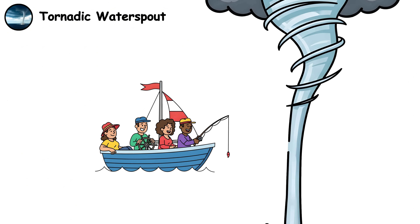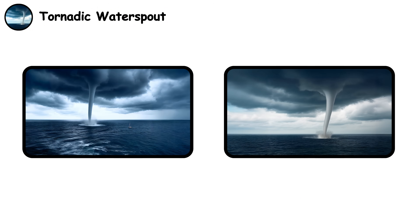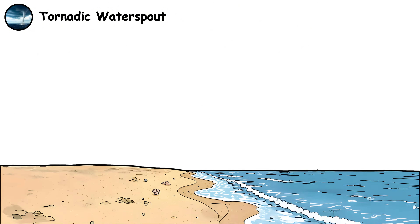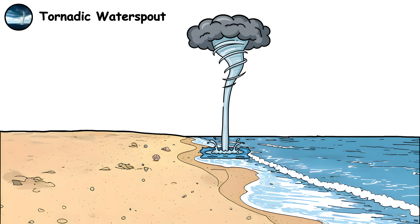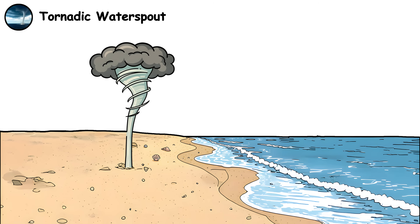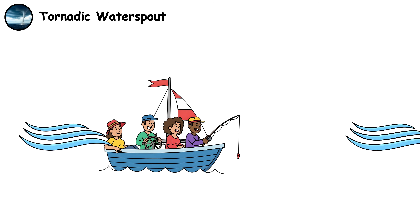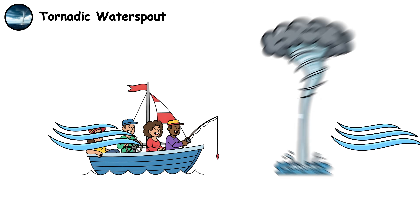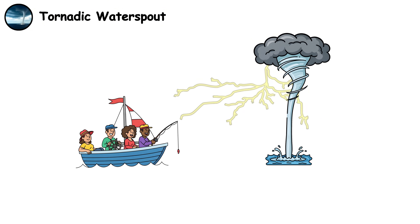Waterspout. Following the idea that the best boat is someone else's, you've set out on a nice weekend ocean adventure, but then suddenly a funnel descends from a dark cloud overhead and touches the water's surface. Waterspouts have the same structure, origin, and power as their land-based cousins. If they move from water to land, they simply become tornadoes without losing intensity.